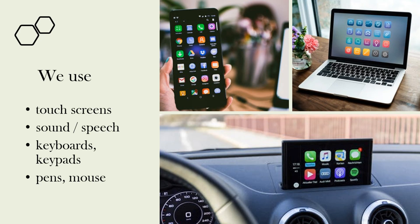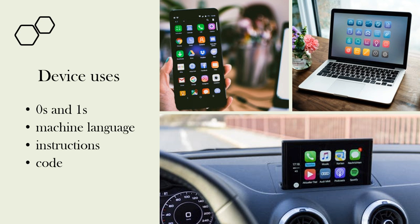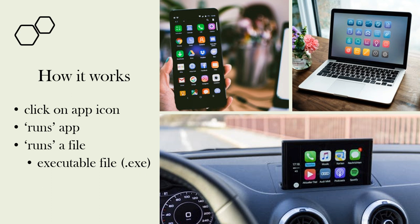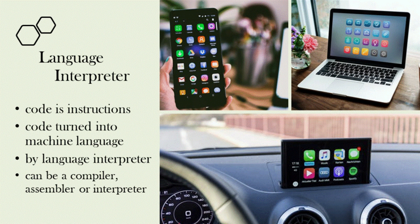The language interpreter — you're used to using your device; you may have a touchscreen, sounds, speech, keypad, keyboard and mouse, or even a pen. We interact with our device and tell it what we want to do. The device doesn't really understand that; it understands zeros and ones, which we call machine language. We give it instructions written in code. When we click on an app, it runs a file called an executable file, and inside that file is code — instructions.